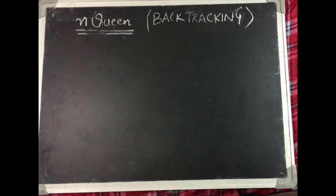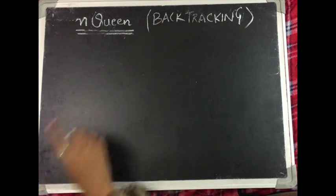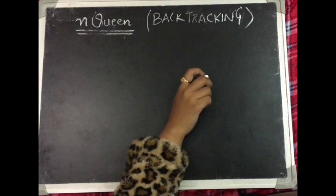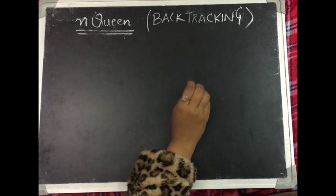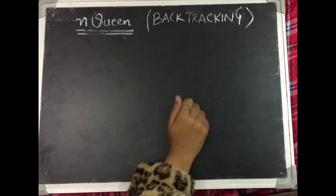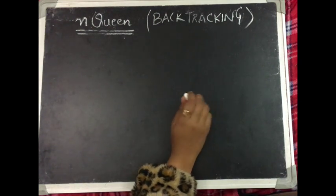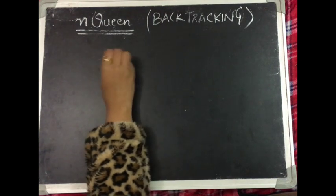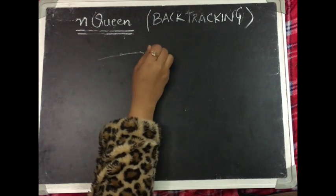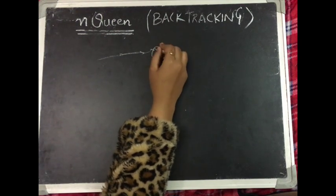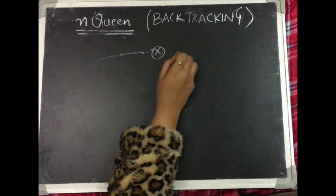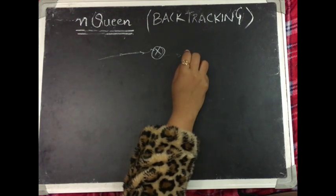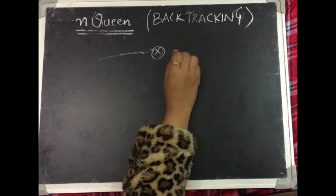Hello everyone, today we are going to discuss the N-Queens problem, which is an application of the backtracking design algorithm technique. Backtracking means that you are going on a particular path and then you reach a point where you feel that if you go any further you will not get your solution or destination.